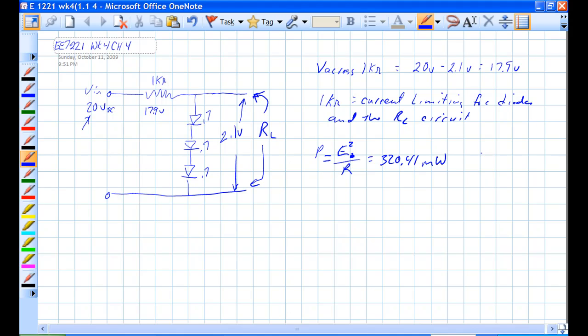So we can get by with a half-watt resistor for just the circuit. Now, it depends on how much current RL is going to draw through the 1K ohm, as to how much wattage that thing is actually going to use.